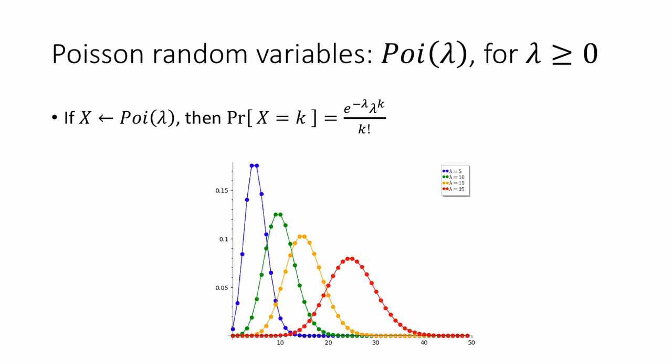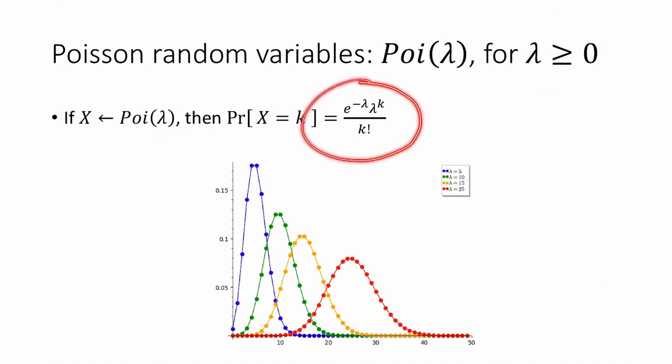For any non-negative parameter lambda, we can define the Poisson distribution with parameter lambda by its probability mass function as follows. If x is a Poisson random variable with parameter lambda, then the probability that x equals k for any positive integer k is equal to e to the minus lambda times lambda to the k, all divided by k factorial. That might look like a pretty strange expression if you haven't seen it before, but we'll see why it's really nice soon.